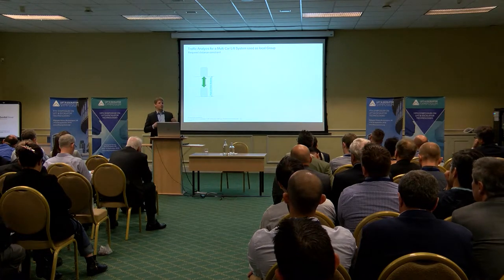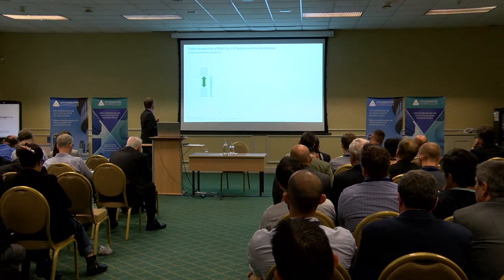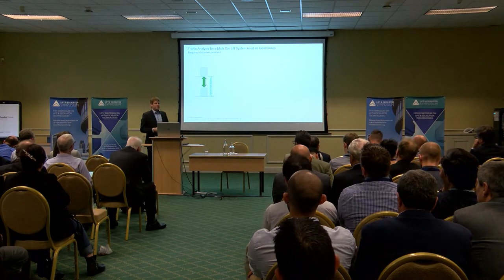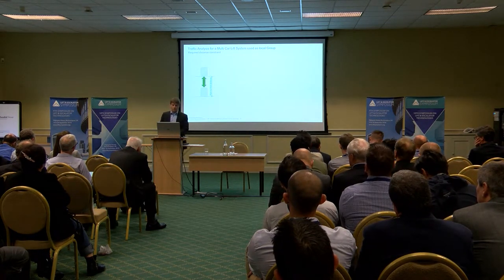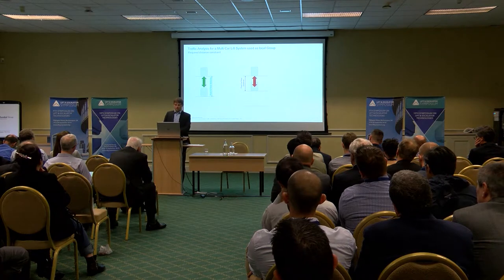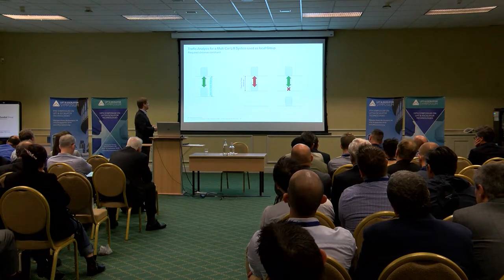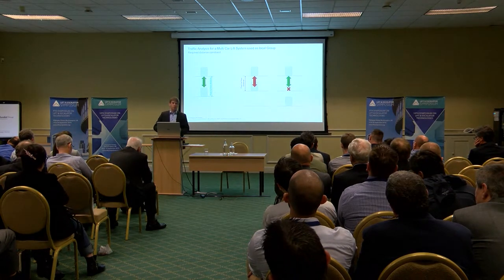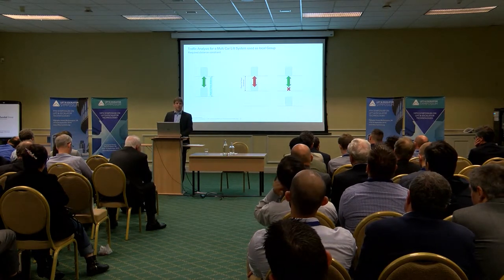Another factor affecting the freedom of movement of the following car is the floor-to-floor distance and the required distance between cars. If the floor-to-floor distance is long enough that two cars can stand at adjacent floors, it's fine. But more likely the floor-to-floor distance is shorter than the required car-to-car distance. In that case, the following car's freedom of movement is limited — it cannot stop at the floor immediately below; there needs to be one floor in between. We'll see the effect of this required distance in the results.